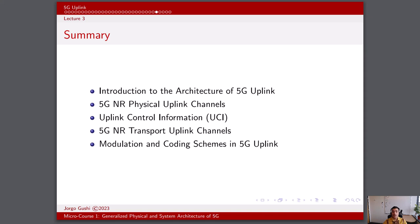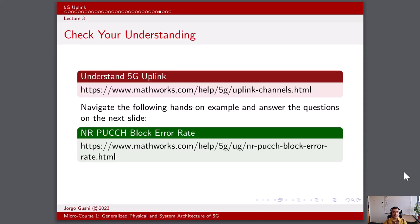To wrap up the discussion on 5G uplink: we started by introducing the overall architecture of 5G uplink, then examined key physical channels like PUSCH and PUCCH essential for transmitting user data and control signals. We explored the importance of UCI in coordinating network operations and optimizing resource allocation, discussed transport channels such as PRACH vital for data transmission and network connectivity, and delved into modulation schemes like QPSK, 16QAM, and higher-order QAMs along with coding schemes like turbo coding and LDPC. To check your understanding, you can visit the MathWorks documentation page titled 'Understand 5G Uplink' and navigate the hands-on example provided.